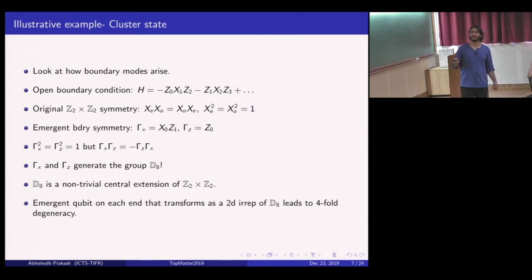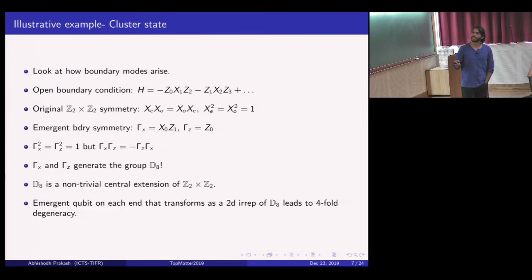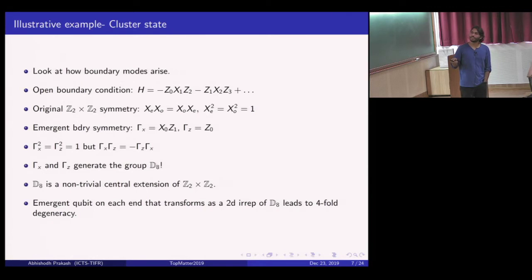If you write down the Hamiltonian with open boundary conditions and choose a particular symmetric boundary termination, you still have the original Z2 × Z2 symmetry—the Ising spin-flip symmetries on even and odd sites. However, there are new symmetry generators that appear only on the boundary. These boundary operators also leave the Hamiltonian invariant, but while they each square to identity like the original symmetry operators, they no longer commute—they anti-commute. The group these two boundary generators generate is no longer Z2 × Z2, but the dihedral group D8 of eight elements. So the original symmetry is Z2 × Z2 and the symmetry that appears on the boundary is D8.